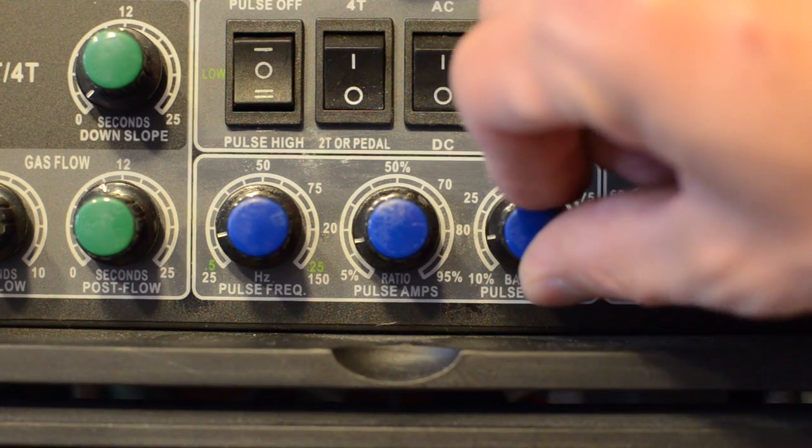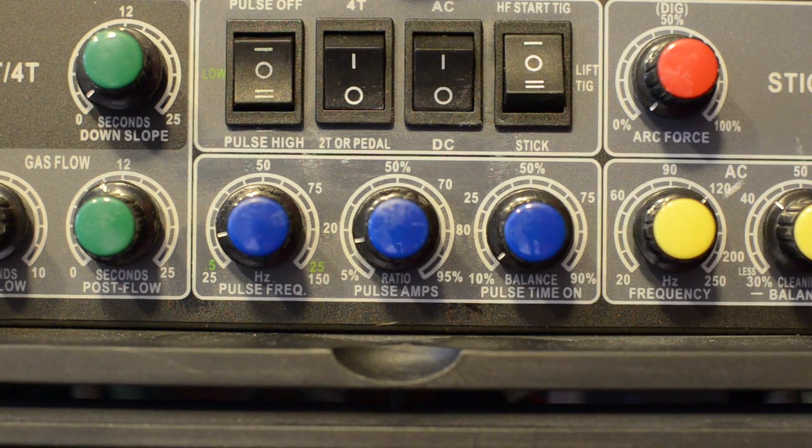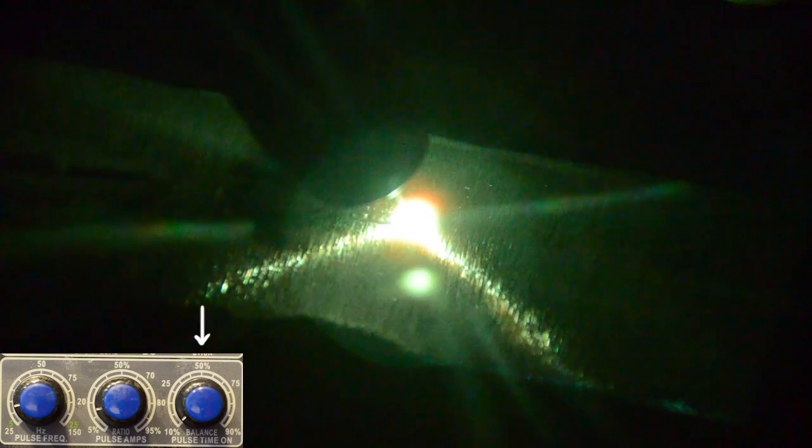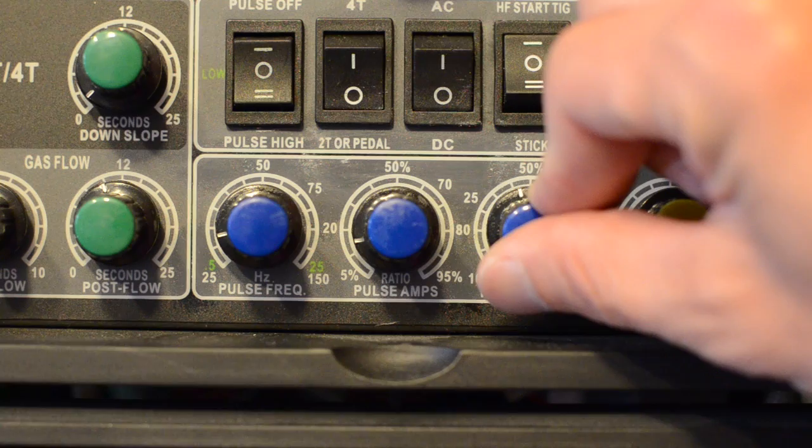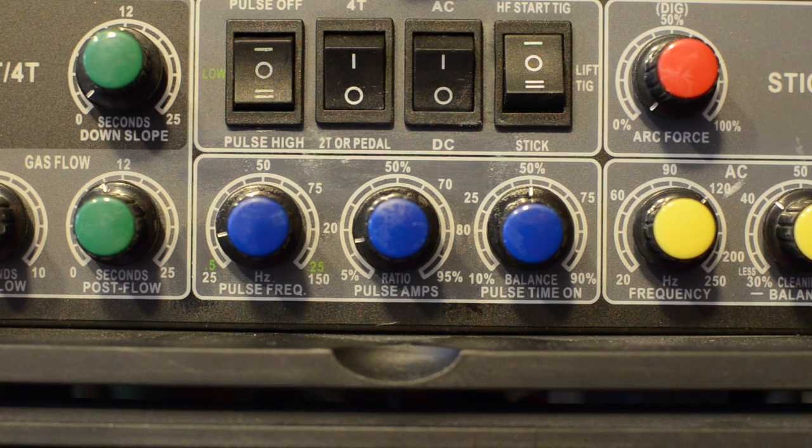Back to base settings. We're now gonna turn pulse time on all the way down. So now when it's getting a burst of amperage, it doesn't last that long. Now we'll turn it up to 50%, and you can see now that it lasts longer.